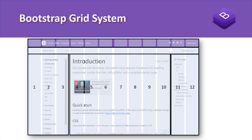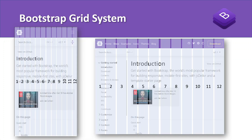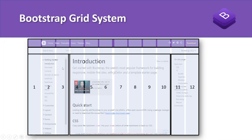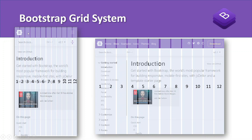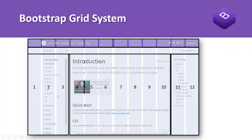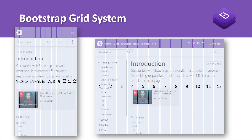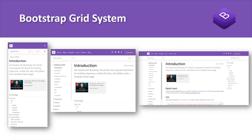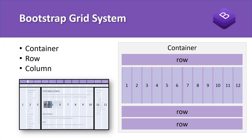This layout works for larger screen widths like laptops or desktops. However, if you apply the same layout to mobile devices, the left sidebar takes too much space and content won't be visible properly. That's why we need to change the layout for different screen sizes — as we saw in the previous Bootstrap breakpoint video.